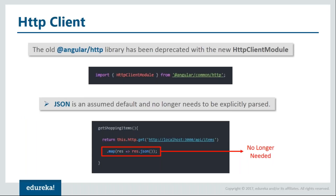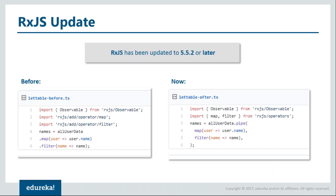There is also news with the HTTP module. The old @angular/http module is now officially deprecated in favor of the new HttpClientModule, which was shipped in version 4.3 in the @angular/common package. To use the new HTTP client, import HttpClientModule from @angular/common/http. If you're replacing the old HTTP module in your current code base, you need to remove the map(res => res.json()) calls, because JSON parsing is assumed as default in Angular 5 and does not need to be parsed explicitly.